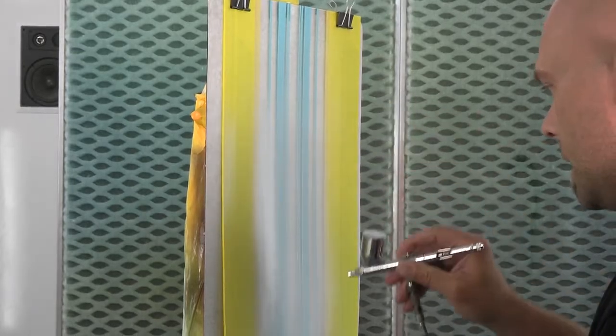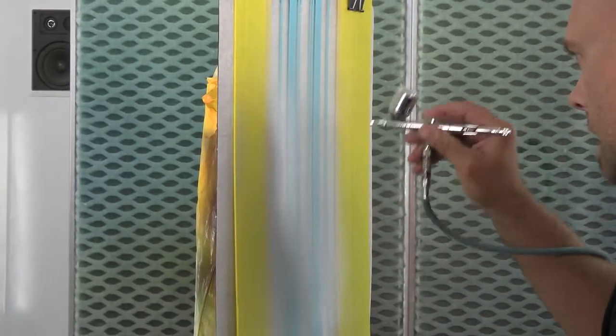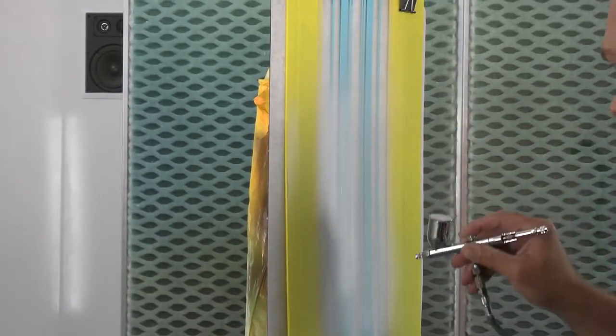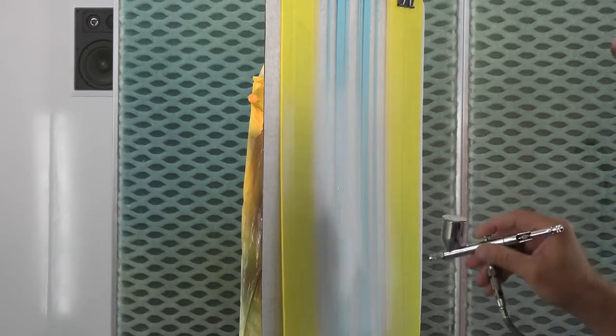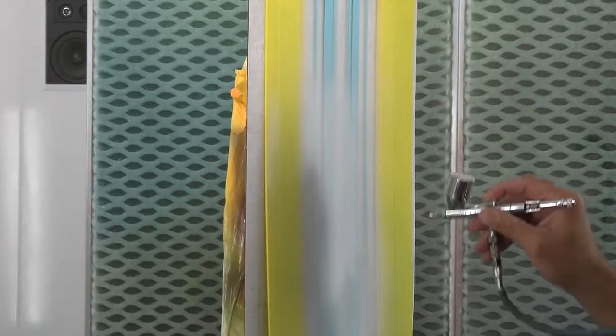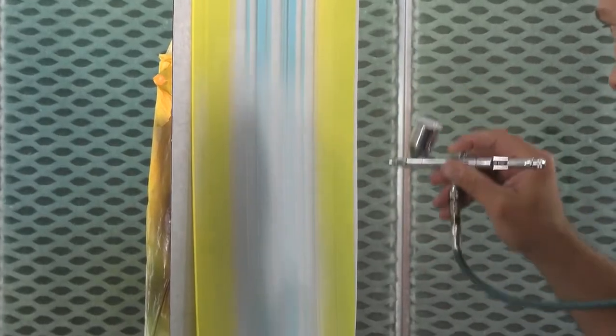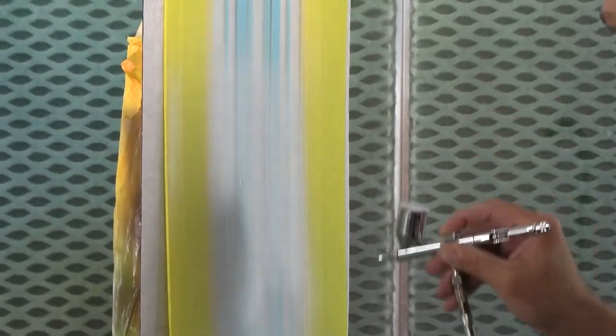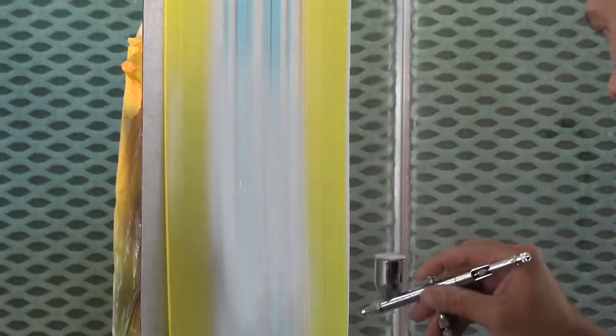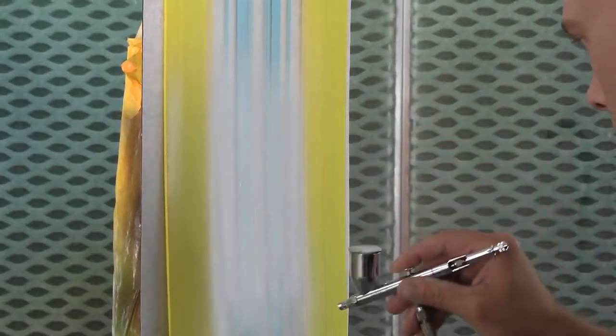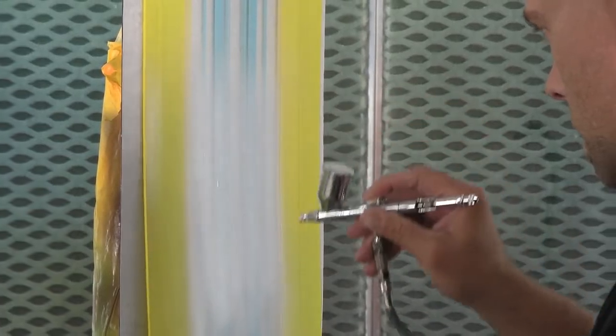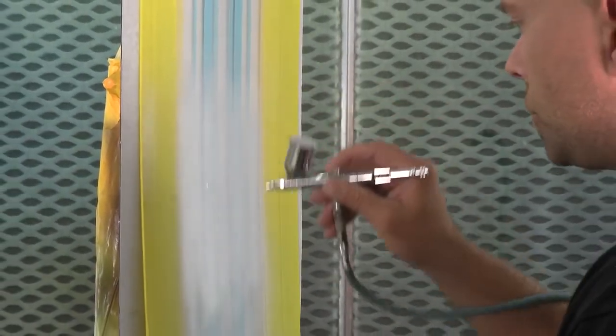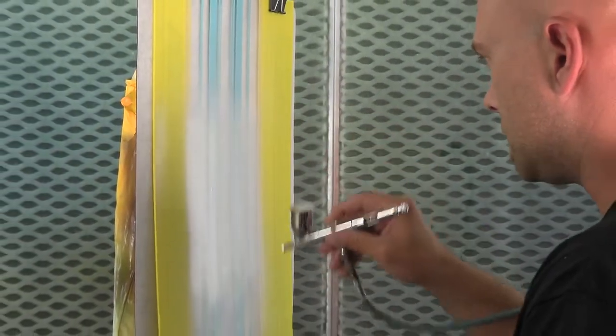So you can already see that that blue tape is starting to disappear with this silver sealer. And that's what you want. Knowing that that is going away is going to really push that silver, that pearl silver, right where you want it without creating a huge drop-off of graphic tape line.